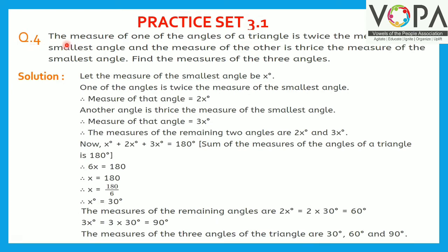Question number 4. The measure of one of the angles of a triangle is twice the measure of its smallest angle, and the measure of the other is thrice the measure of the smallest angle. Find the measures of the three angles. Let the measure of the smallest angle be x degrees. One angle is twice the smallest, so that angle equals 2x degrees. Another angle is thrice the smallest, so that angle equals 3x degrees.